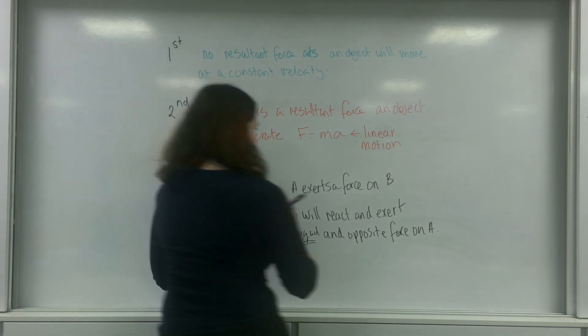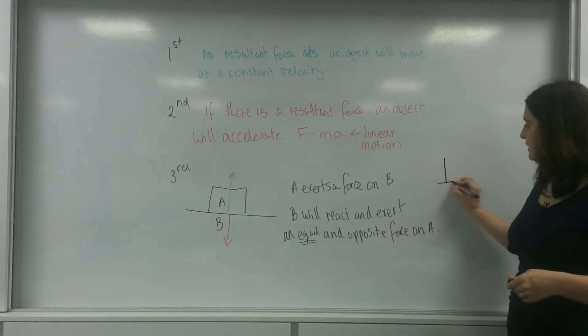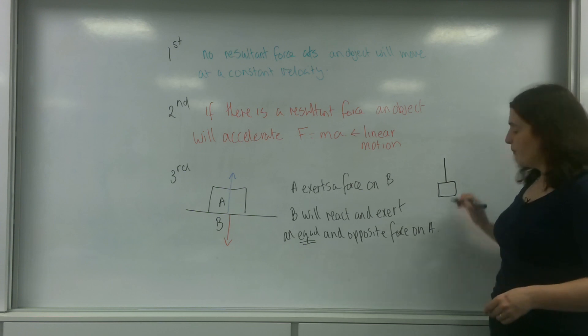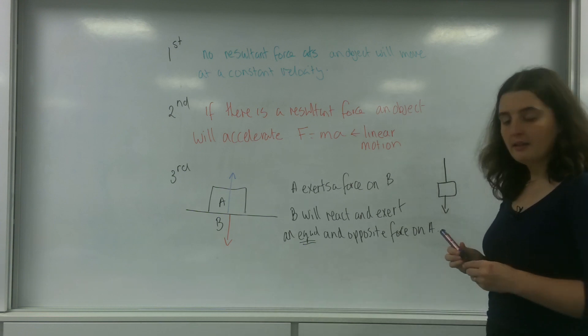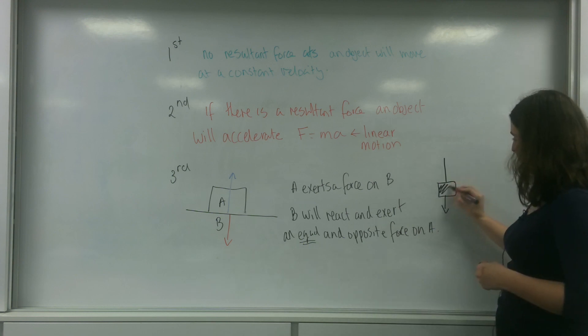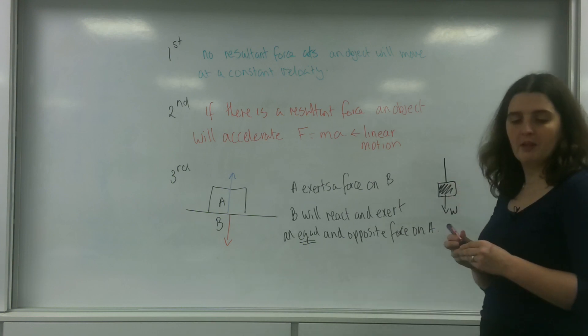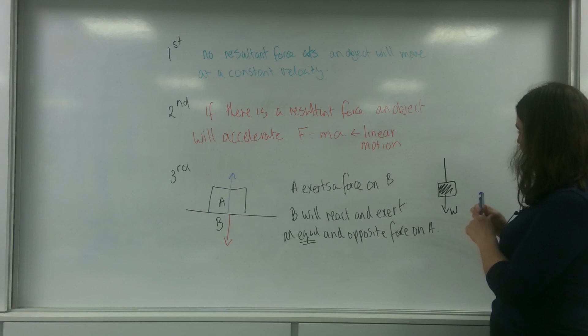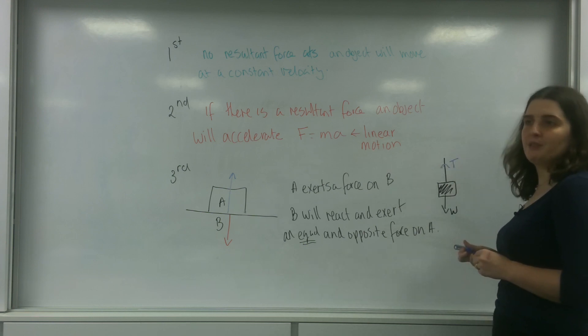So if I just draw that as an example, here's my piece of string, and here's my ID. My ID puts a weight down on this string. So this is from the block here, so this is the weight. And the string will exert a tension in the opposite direction.